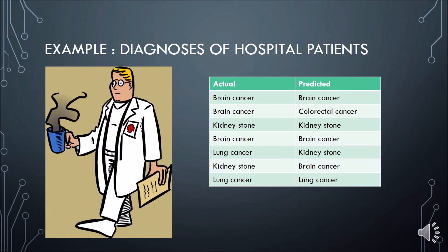Machine learning is like a doctor going to medical school. You train the machine using certain models such as Naive Bayes, Neural Network, or classification trees. It's like sending a doctor to medical school, having the doctor learn from courses, write a thesis, graduate, and then come to a hospital to do their job — classifying patients and making predictions of what kind of diseases they have based on their symptoms.